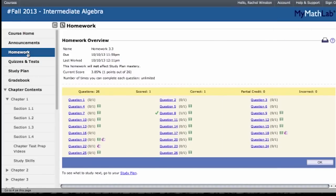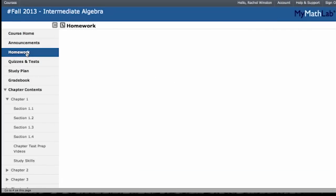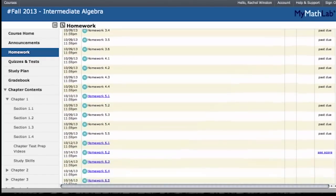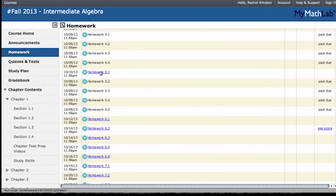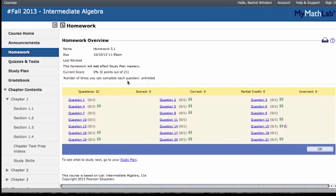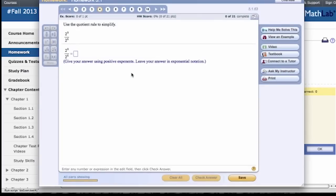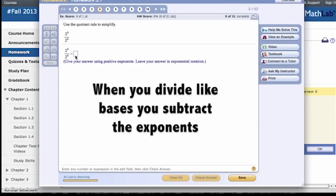So, now we scroll down to homework 5.1. And in homework 5.1, we're going to do question 4. Question 4 is use the quotient rule to simplify. So, you know that when you divide like bases, you subtract the exponents. So, 9 minus 6 is 3.